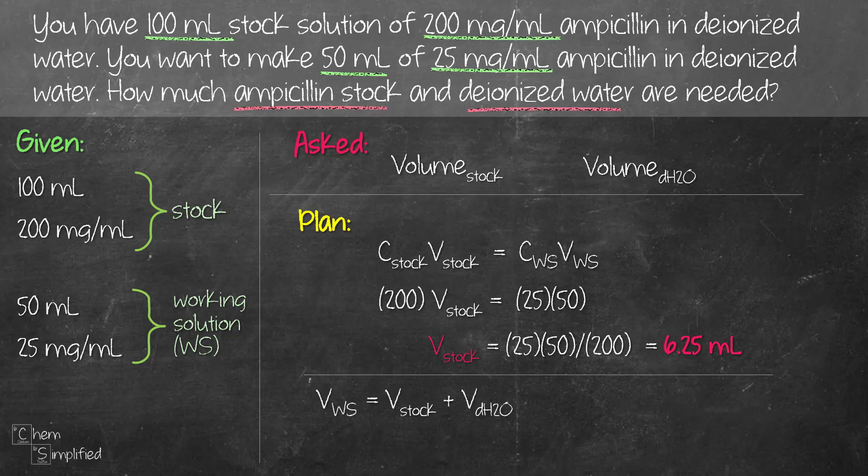So that means if we add up the volume of the stock solution 6.25 ml with the volume of deionized water which we don't know and need to find, that basically is going to become the working solution which is 50 ml what the question tells us. So we rearrange this formula to give us the volume of deionized water. Basically we take that 50 ml and then we subtract from that 6.25 that we found and that's going to give us 43.75 ml. That is the volume of water that we need to add to our stock 6.25 ml in order to prepare a 50 ml working solution.